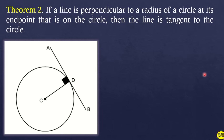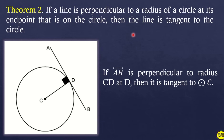Theorem 2: if a line is perpendicular to a radius of a circle at its endpoint that is on the circle, then the line is tangent to the circle. So if line AB is perpendicular to radius CD at point D, then it is tangent to circle C.